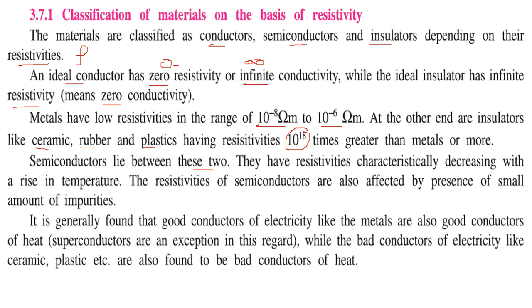Semiconductors have resistivity that characteristically decreases with the rise of temperature, and is also affected by impurities. It is generally found that good conductors of electricity, like metals, are also good conductors of heat. Superconductors are the exception. While bad conductors of electricity, like ceramic and plastic, are also found to be bad conductors of heat.